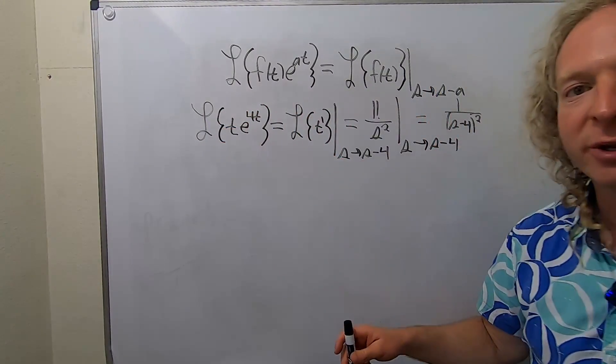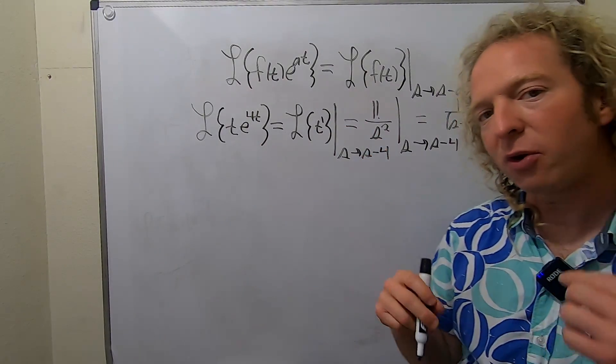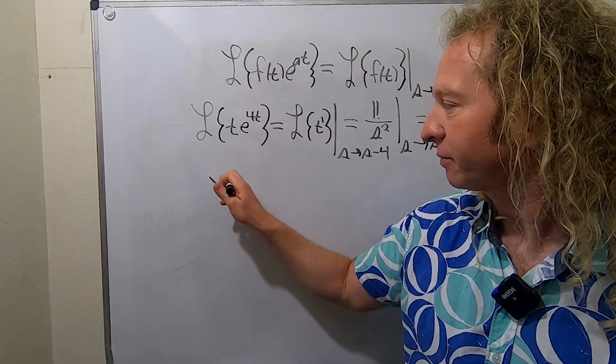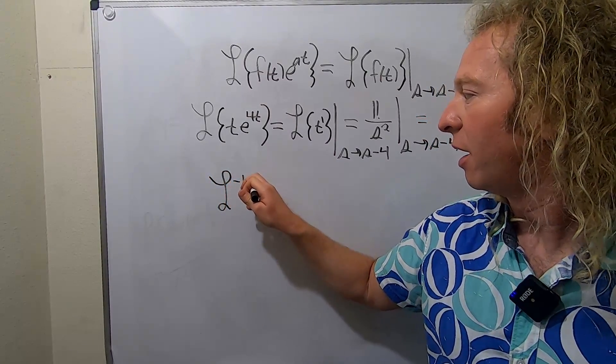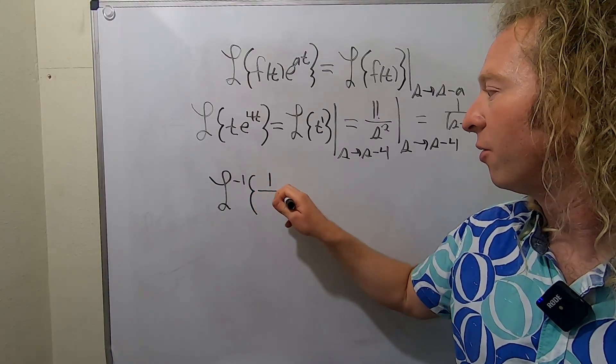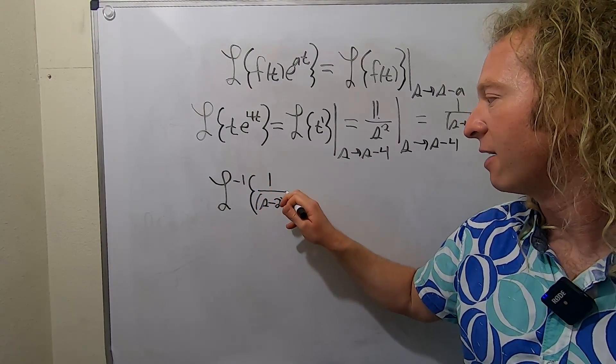If you're just computing Laplace transforms, you drop the e, and then you replace it with the shift. But when you're going backwards, it's a little bit different. So let's say we have the inverse Laplace of 1 over s minus 2 cubed. Say we have this.